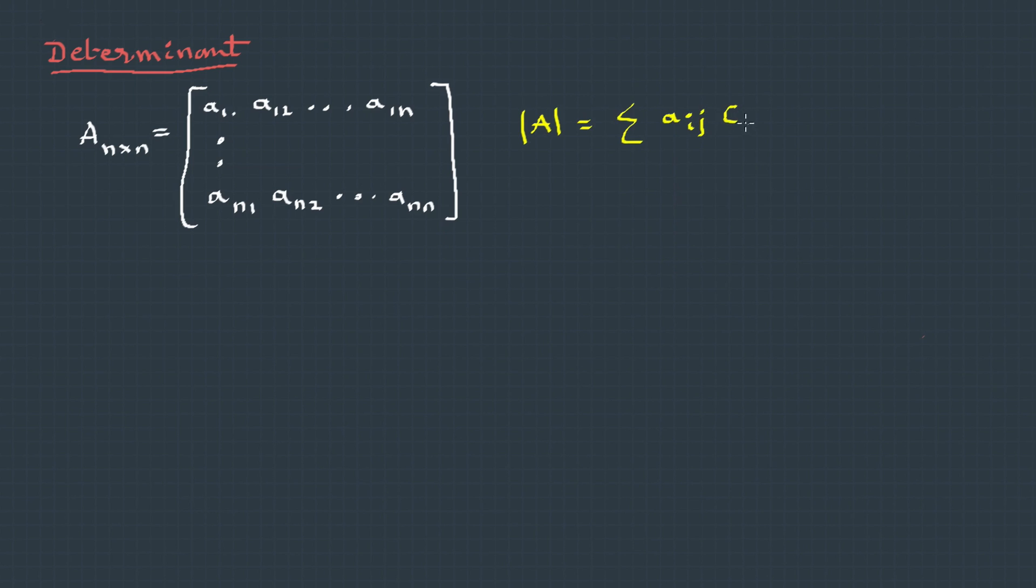Now this element what we are choosing could be from any row or a column, so I can say this as aij and Cij is its corresponding cofactor.